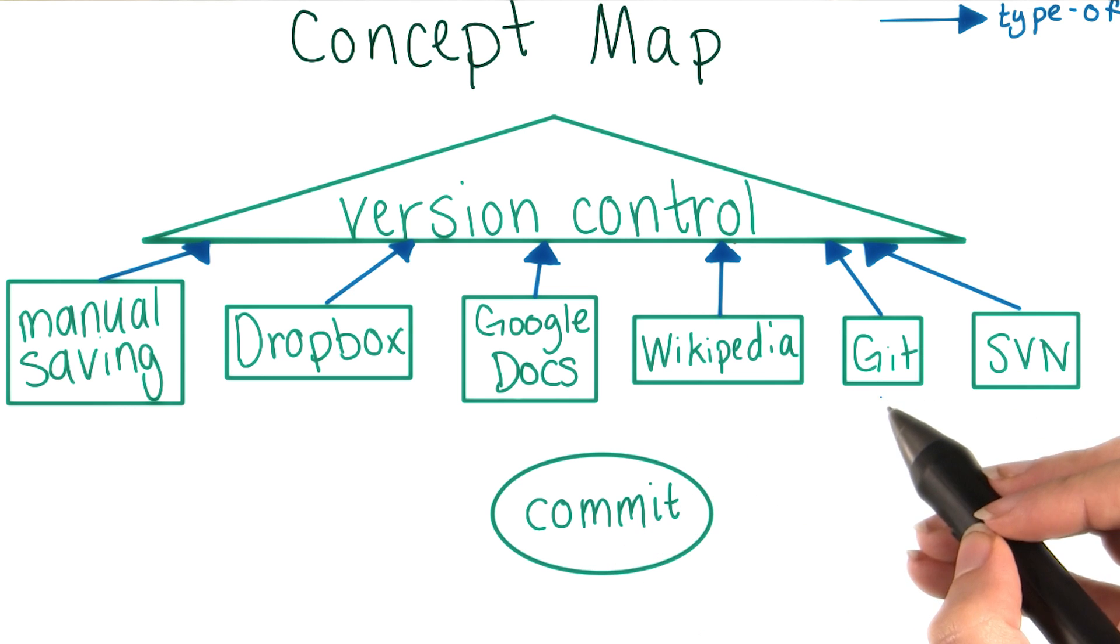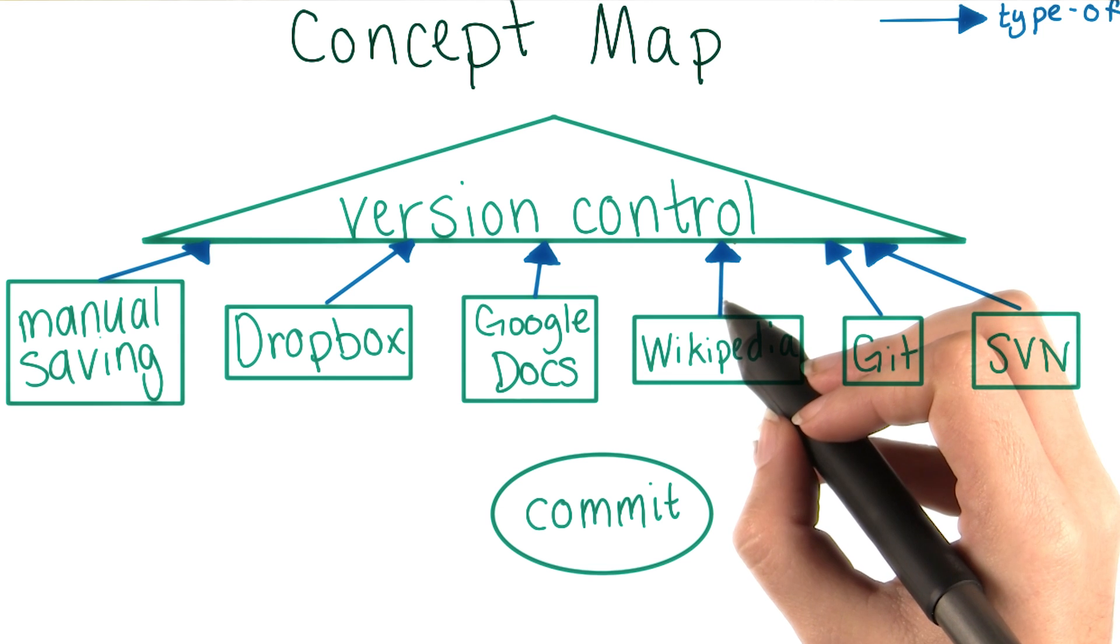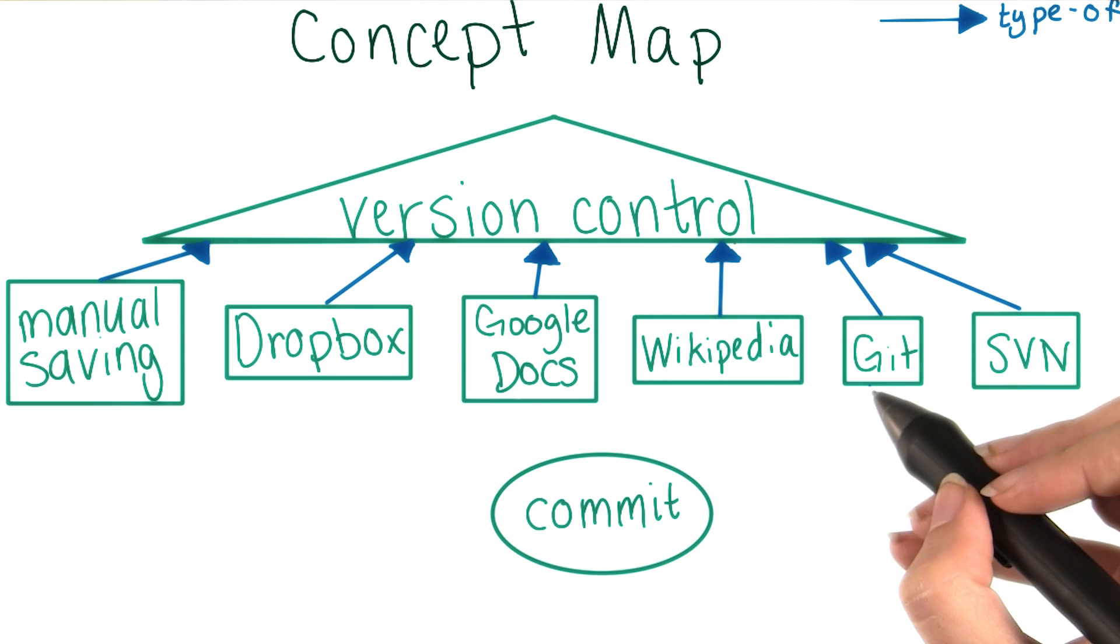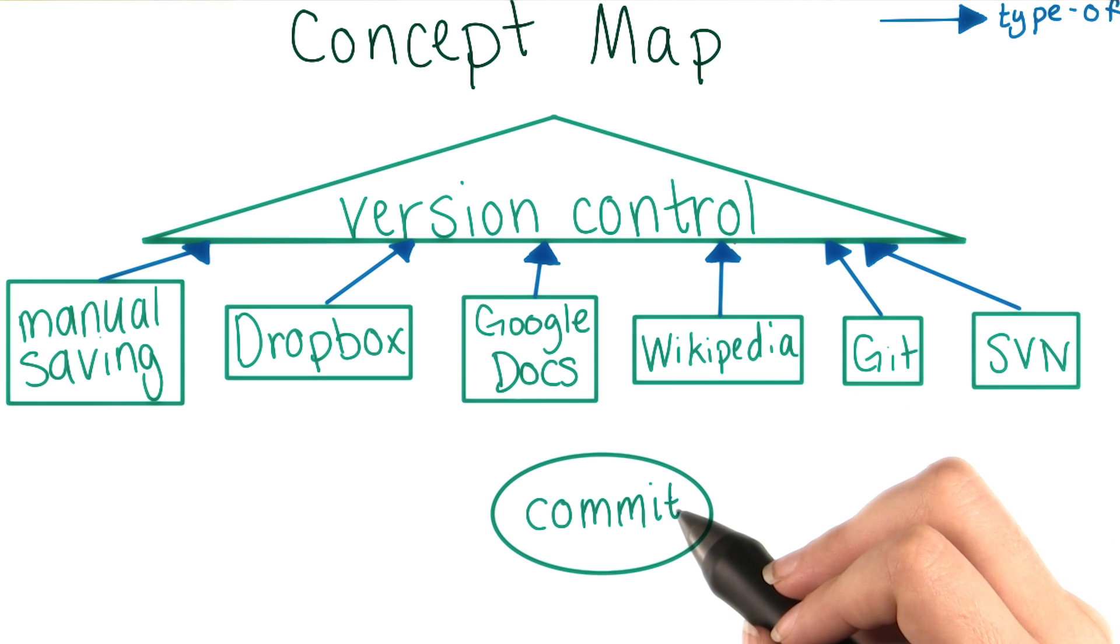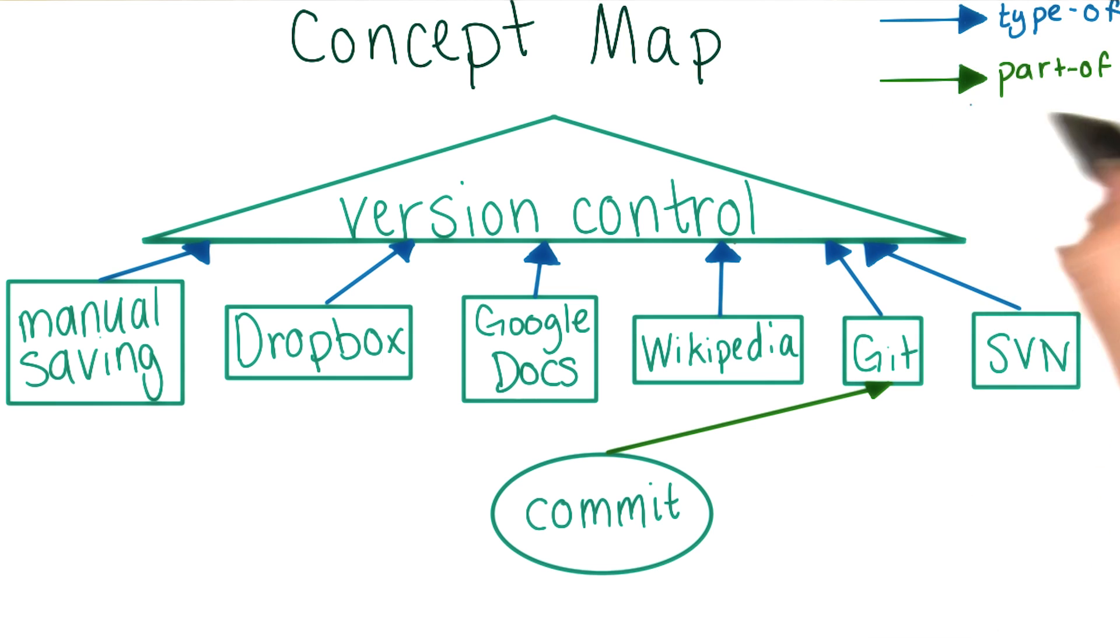Do you think that this should be the same kind of connection as the ones we already have? Remember that those were type of connections. Commits aren't a type of git, but rather a component. So the connection here should be a new color that indicates a part of connection. We'll use green for that. And we'll add the label here.